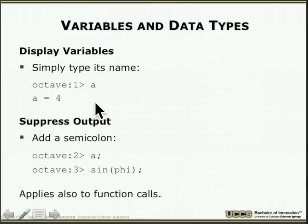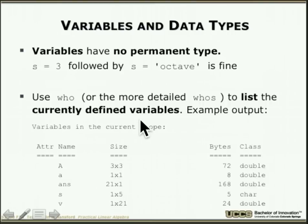To see a variable's value, just type its name. To suppress output, add a semicolon — extremely useful in programs where you don't want to see every intermediate result. This applies to function calls too. Think of the semicolon as the end-of-line indicator that prevents output from being displayed.